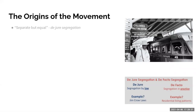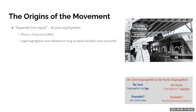Something to understand is this idea of separate but equal — or what we call de jure segregation. Since 1896, since the Supreme Court decision in Plessy v. Ferguson, the Court said that legal segregation was allowed as long as you provided equal facilities for the different races. As the picture shows, if you had a waiting room for white passengers, so long as you had a waiting room for African-American passengers, you could segregate them.